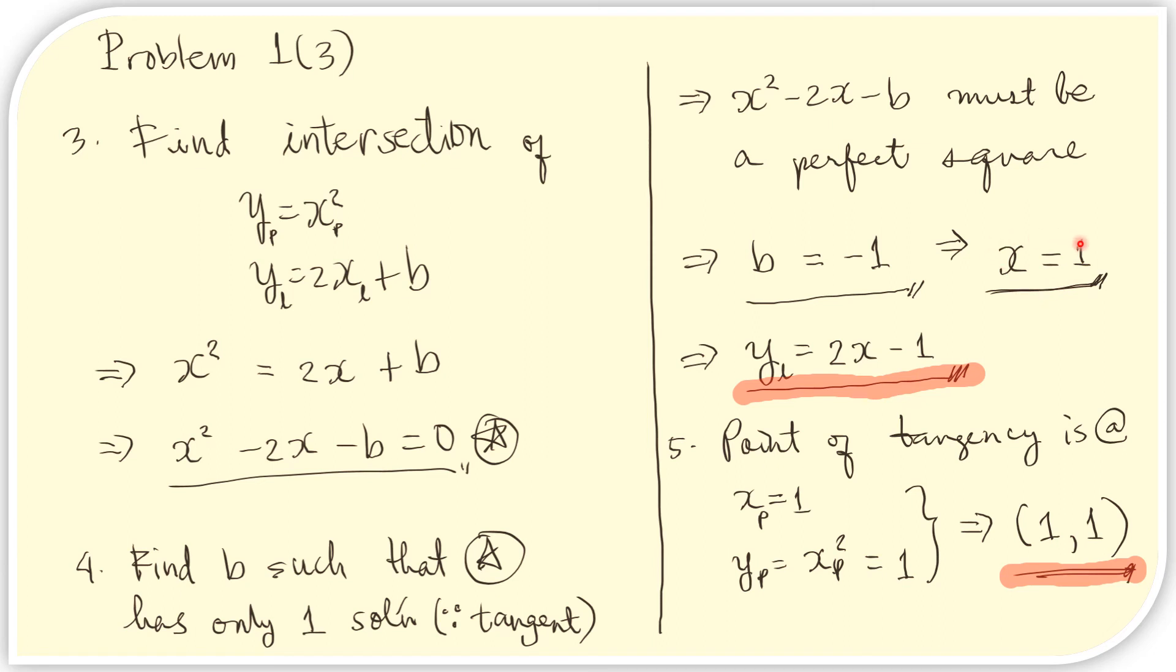If x equals 1, then that gives us the coordinate for the point of tangency. Furthermore, if b is negative 1, then we can complete this equation here. This equation is now this, y equals 2x minus 1. We just replace b with this value we obtained.